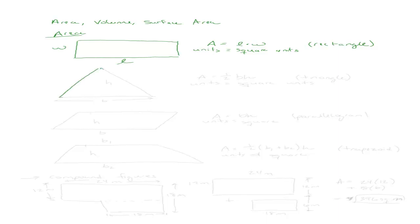Let's also talk about a triangle. The base goes from one end of the triangle to the other, and the height goes from the top of the triangle down to the base. The area of a triangle is one-half base times height. Because it's area, the units are square units.